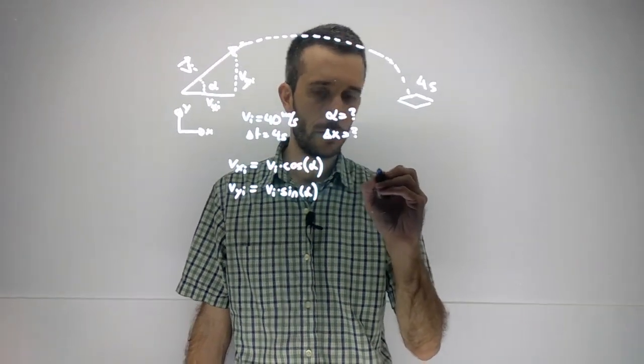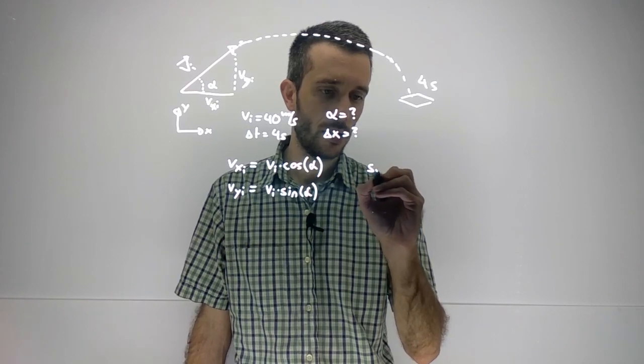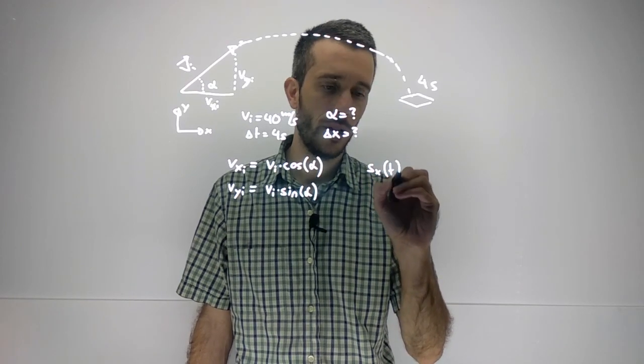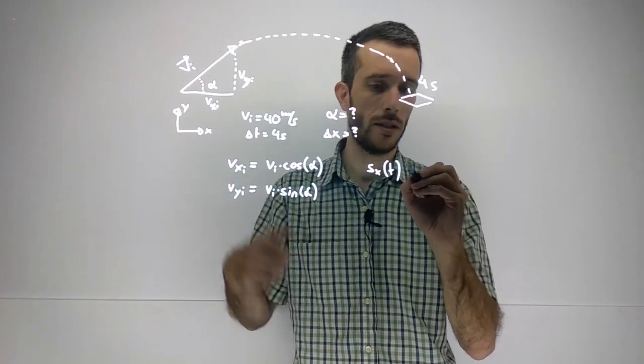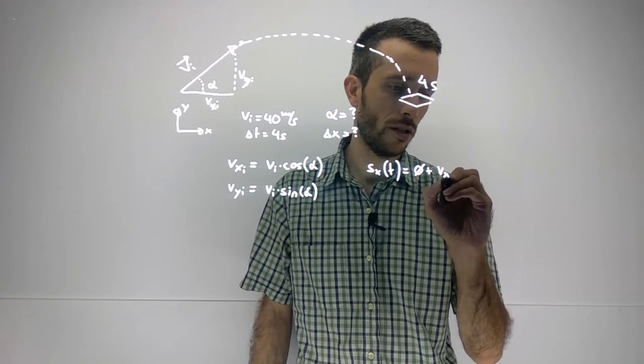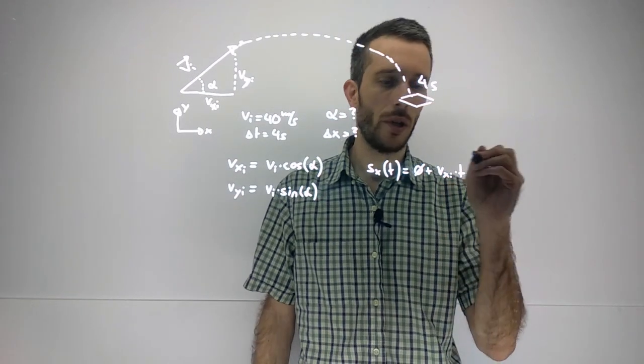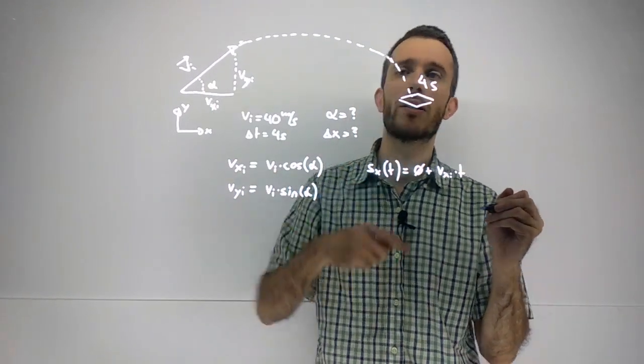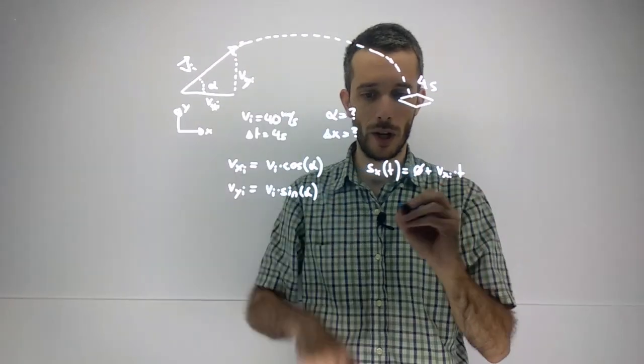Also, we have the x position as a function of time is the initial position, so in this case 0, plus vₓ initial times time plus one half acceleration t squared. There is no acceleration in x direction. The acceleration is only in y direction.